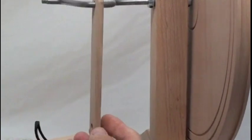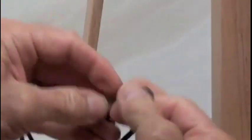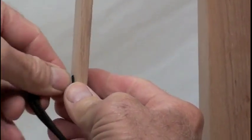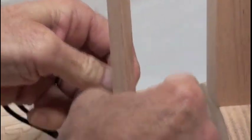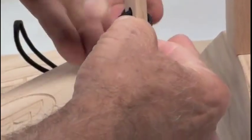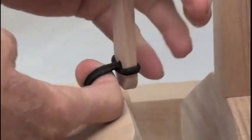Take the right hand treadle pedal and put the loop through the hole in the bottom of the footman. Pull all the way through, open it up and bring it around. And then pull it tight.